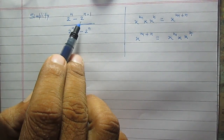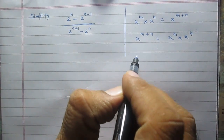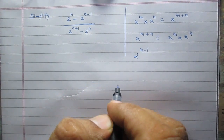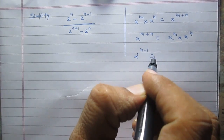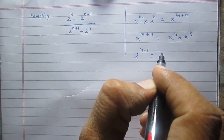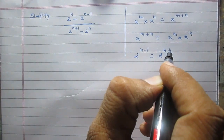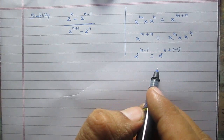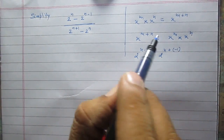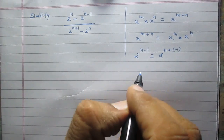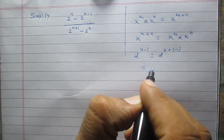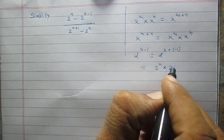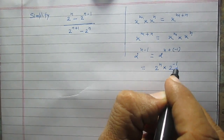Here in the numerator, we have a term 2 raised to the power n minus 1. We can write it as 2 raised to the power n plus minus 1, and using this law, we can rewrite it as 2 raised to the power n multiplied by 2 raised to the power minus 1.